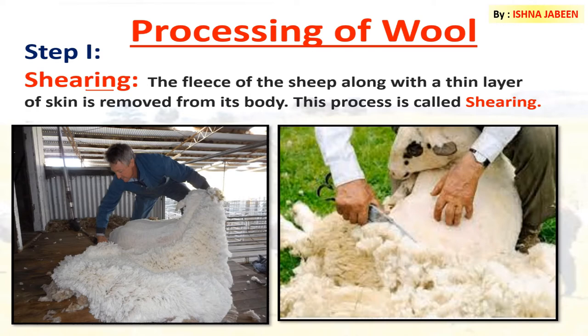The hair provides woolen fibers, which are then processed to obtain woolen yarn. Shearing does not hurt the sheep, just as it does not hurt when you get a haircut. That's because the uppermost layer of the skin is dead.